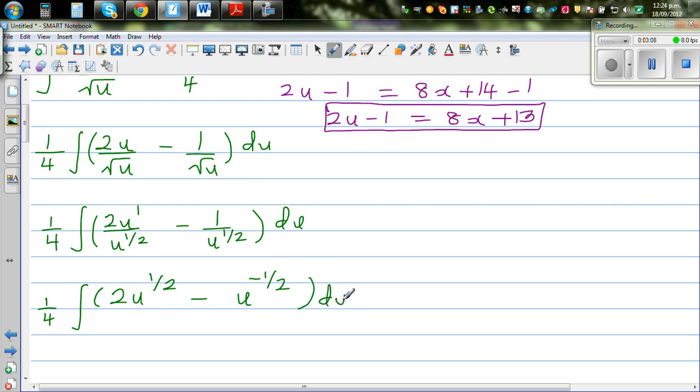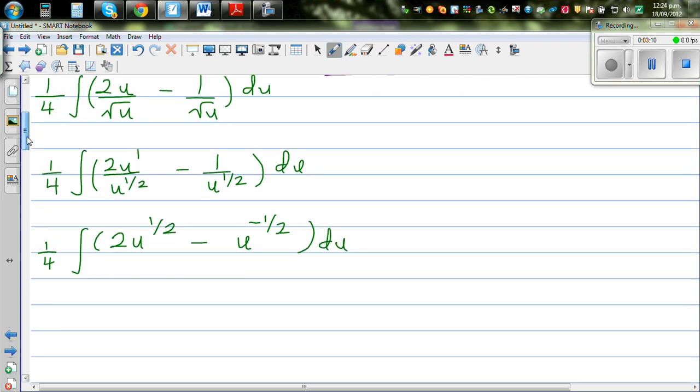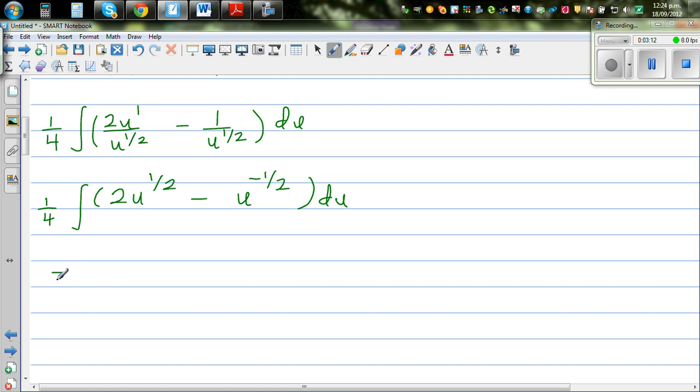So now it is simple integration of polynomial. So this is 1 quarter times, when integrating u to the power half, you add 1. So this is 2u to the power 3 halves over 3 halves.